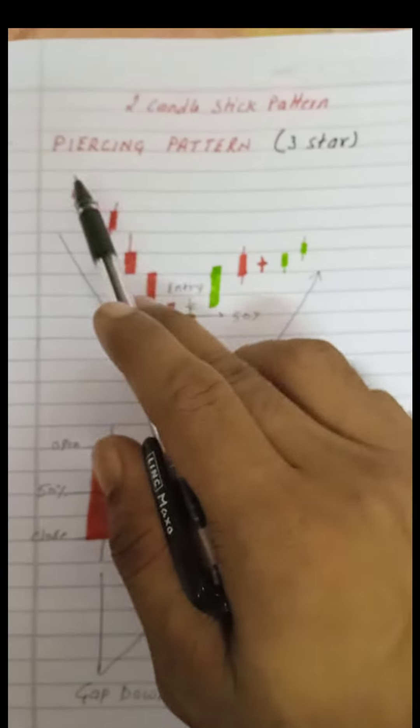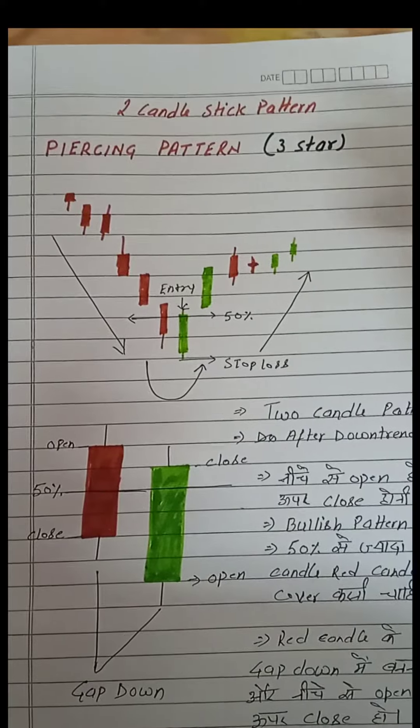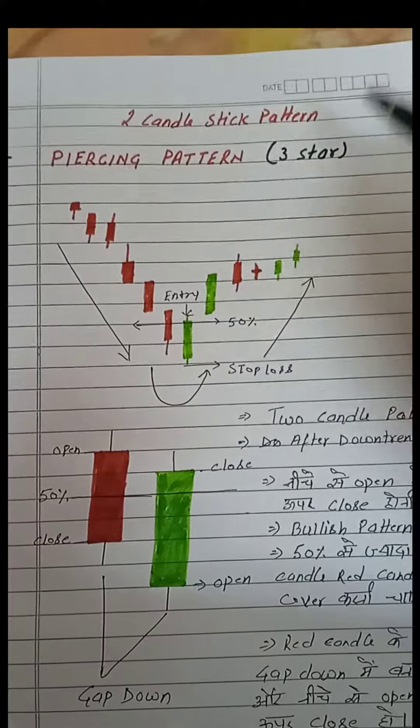Two candlestick pattern, we talk about piercing pattern, which we also talk about 3 star pattern, which is a rating. If you watch movies, you can see 3 star, 2 star, 5 star. So this is your pattern.